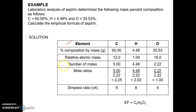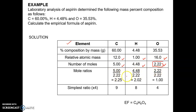The next step is to get the number of moles by dividing each mass by its molar mass — those are the molar masses for carbon, hydrogen, and oxygen. We get the moles for each element. Then we divide all values by the smallest number of moles. Since the smallest is 2.22, we divide all elements by 2.22, giving 2.25, 2.02, and 1.